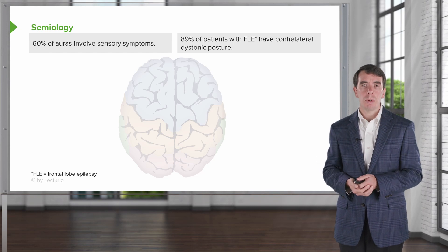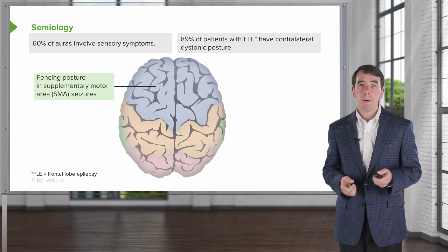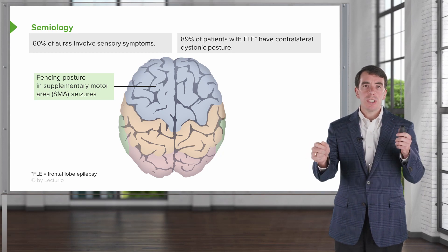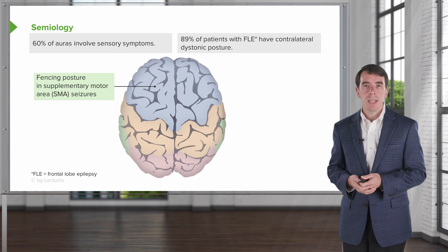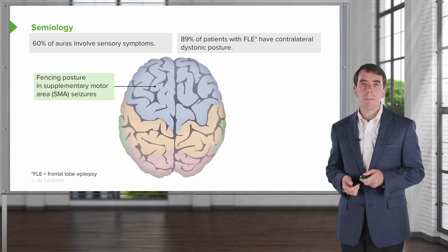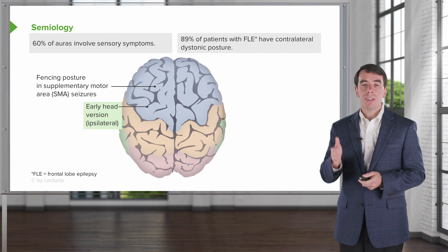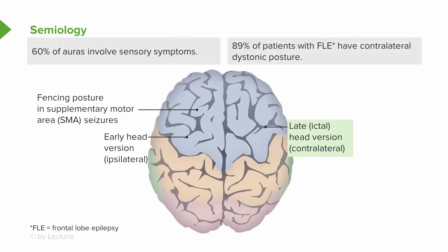Some of these frequencies can help us when evaluating patients. Fencing is a really interesting posture we can see with SMA — supplementary motor area — seizures. Someone who wakes up at night in a fencing posture, which may sound unusual, can actually be having seizures arising from the supplementary motor area. Early head tilting or early version of the head can be seen with seizures on the ipsilateral frontal lobe, whereas late head turning can be seen with seizures from the contralateral frontal lobe. So if the head is turning to the right early in the seizure, that may suggest a right frontal seizure onset; if turning to the right late in the seizure, that suggests a left-sided frontal onset.